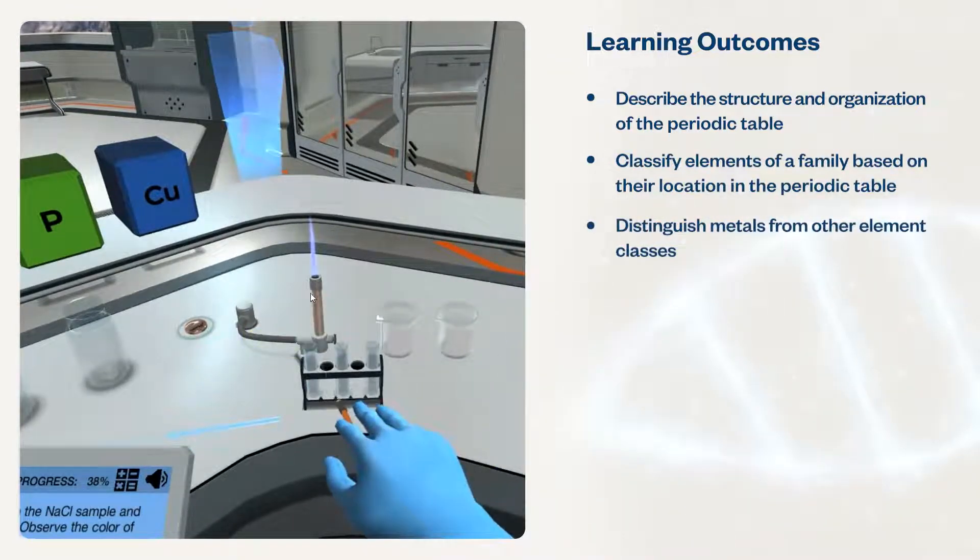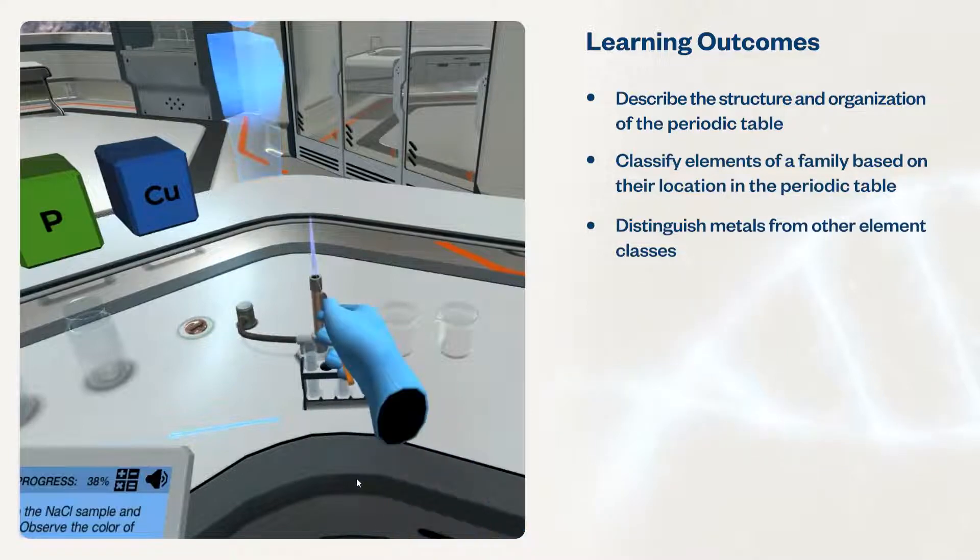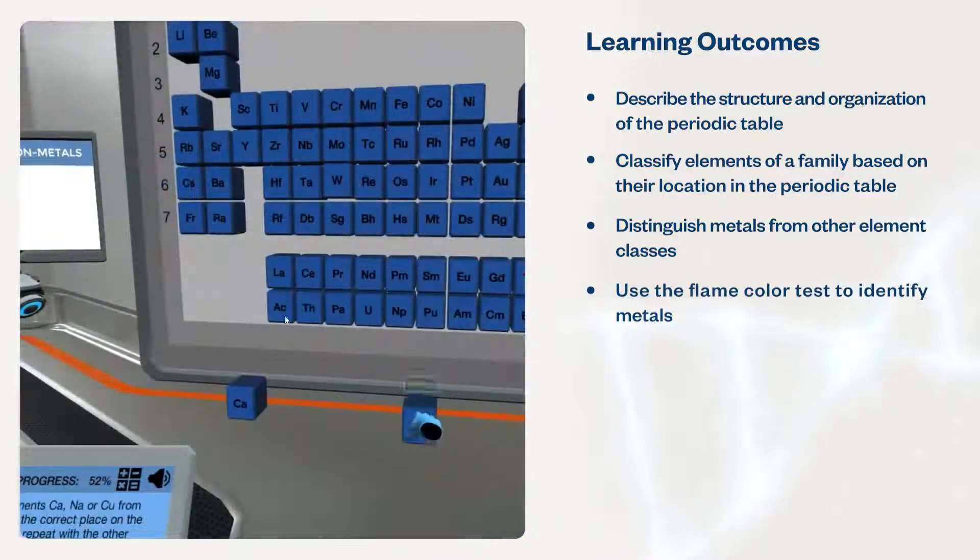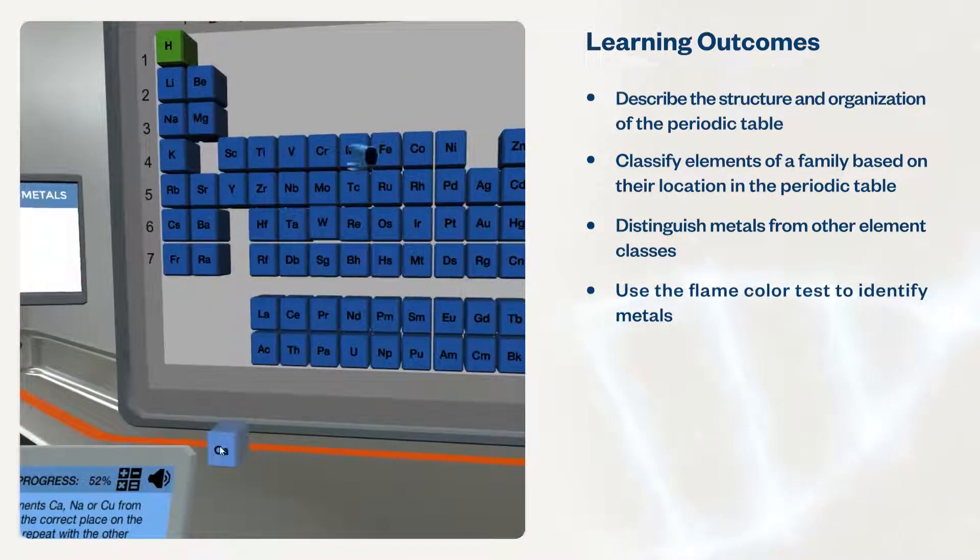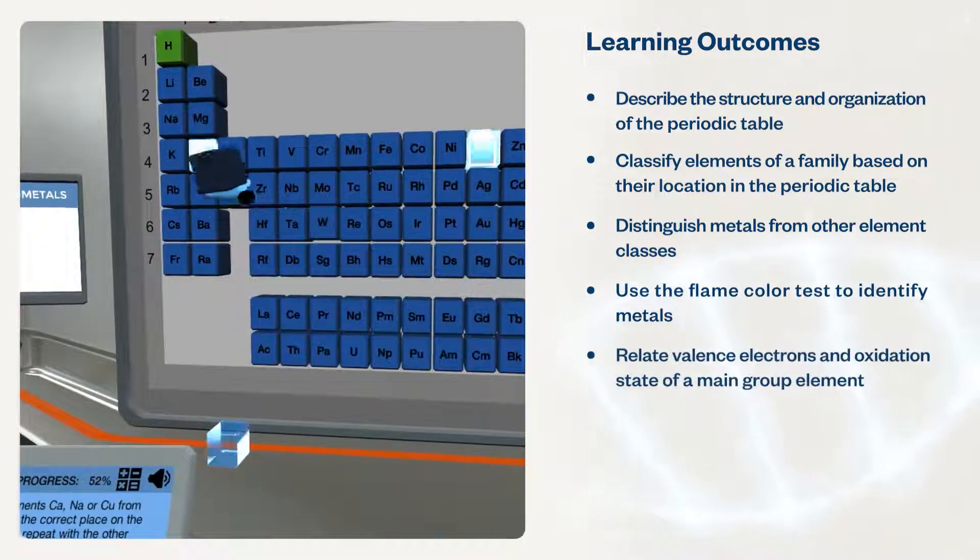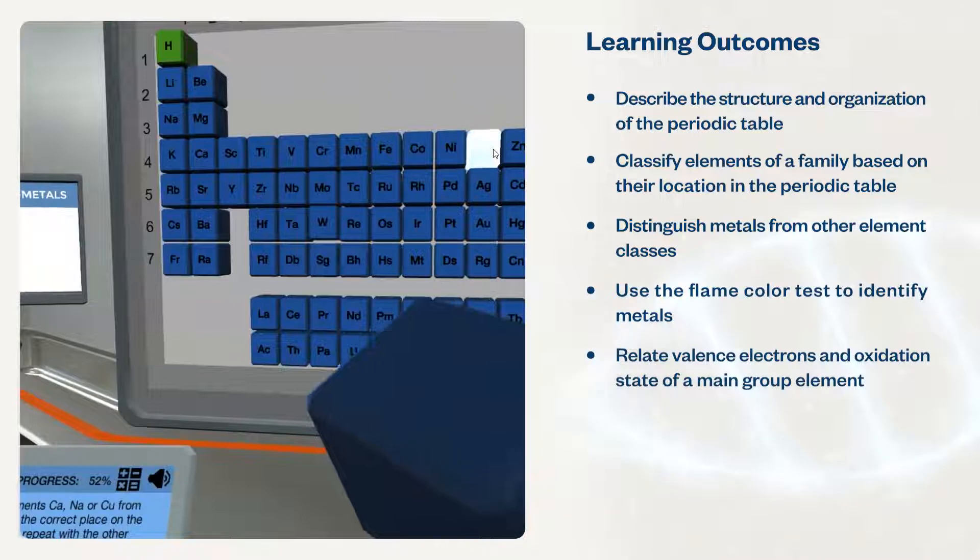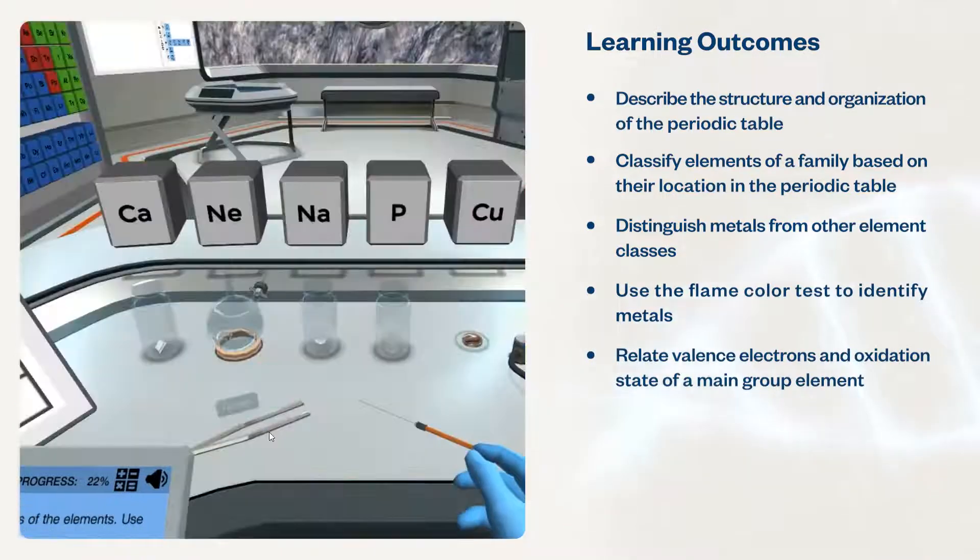Students will distinguish metals from other element classes based on typical characteristics, use the flame color test to identify metals based on their position in the periodic table, and relate valence electrons and oxidation state of a main group element to its position in the periodic table.